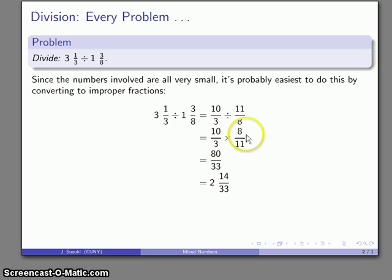And again, the numbers involved, 10, 8, 3, and 11, aren't too big. 80 over 33, not too difficult to work with. So it seems reasonable to use the method of converting to improper fractions for this problem.